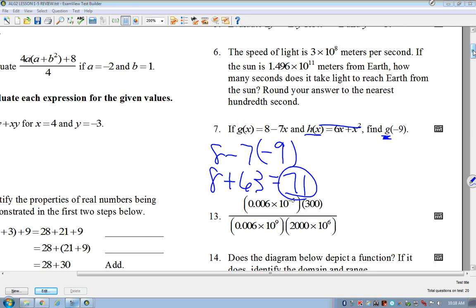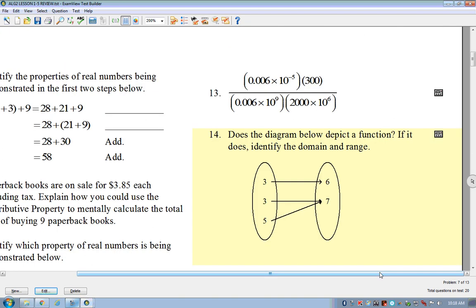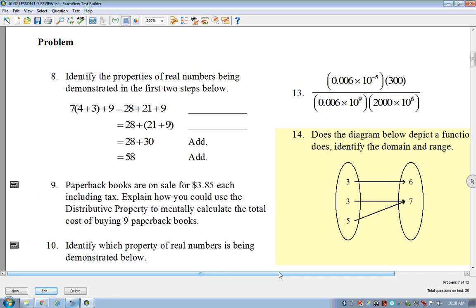All right. Does that help out a little bit? Whenever they say g, I'm going to go to the g equation, and I'm going to plug it into that x. Everywhere where I have x. Now, we've dealt with pretty simple ones that only have one x. We deal with more complicated ones where there's more x's. I'll plug in negative 9 every time there's an x. All right. Number 8. Who was number 8?